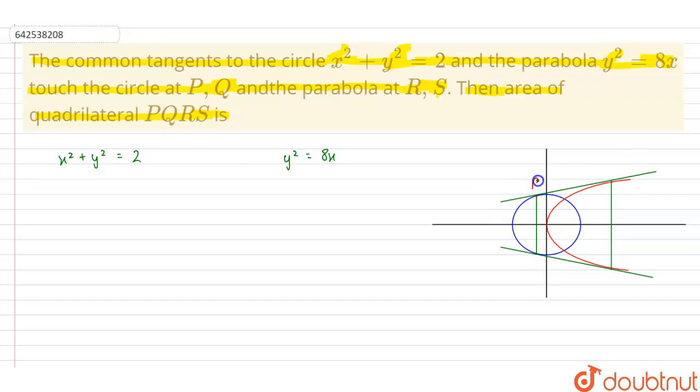which meet the circle at the point P and Q and the parabola at the point R and S. Now we see that the quadrilateral PQRS is a trapezium. So to find the area of PQRS we will first need to find the coordinates of P, Q, R and S.